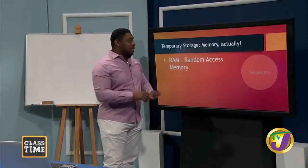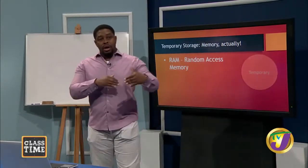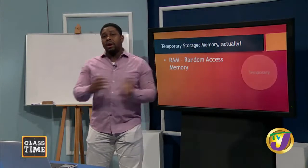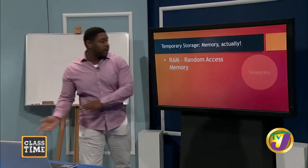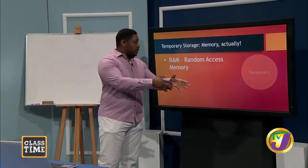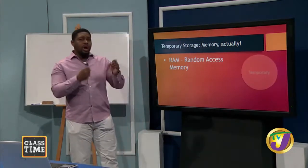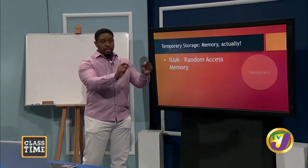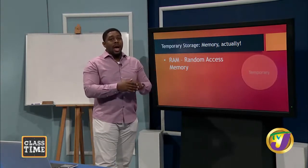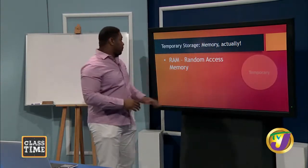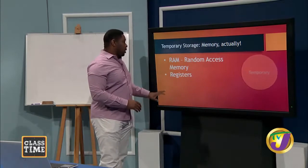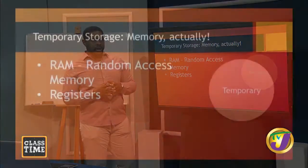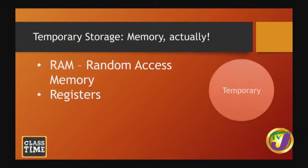Random access memory stores information so that your CPU can grab it quickly, as opposed to going straight to your hard disk. It's called random because you can go to any position in the memory based on how your operating system has managed it. We also have registers — the CPU workhorses — because they are found directly on the CPU.